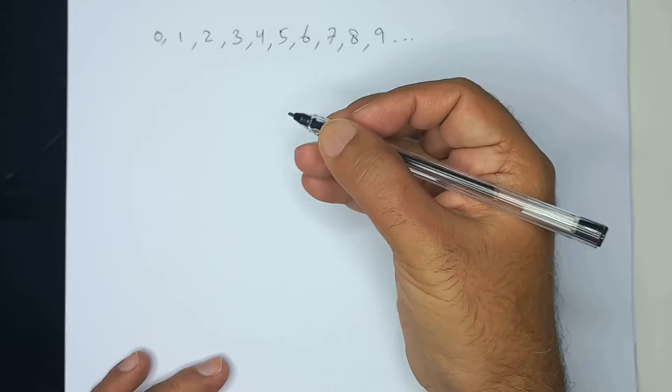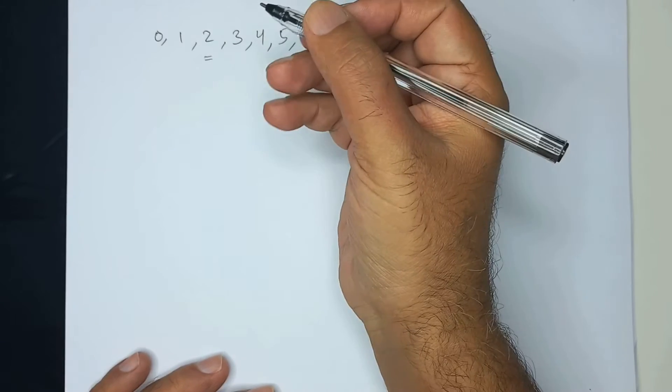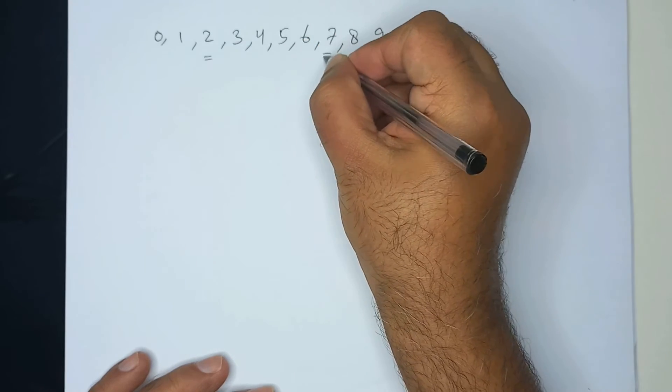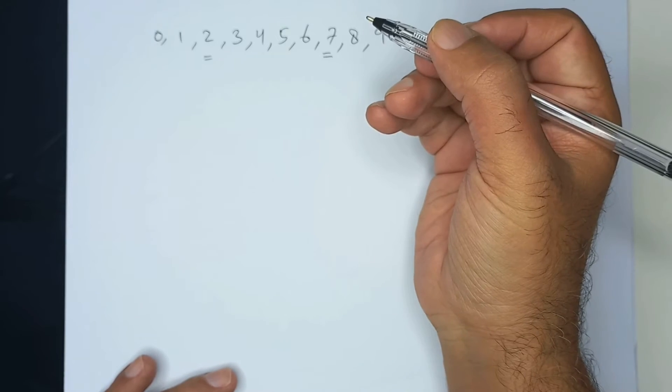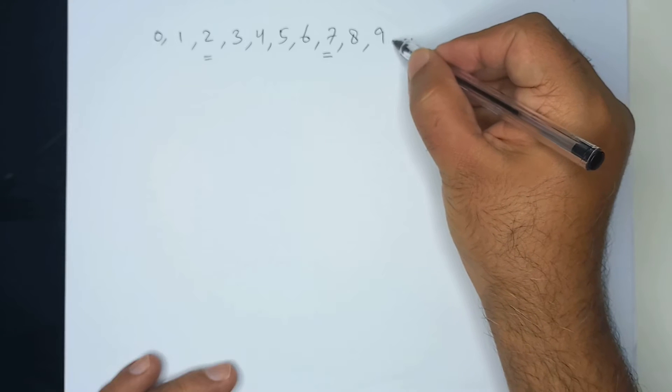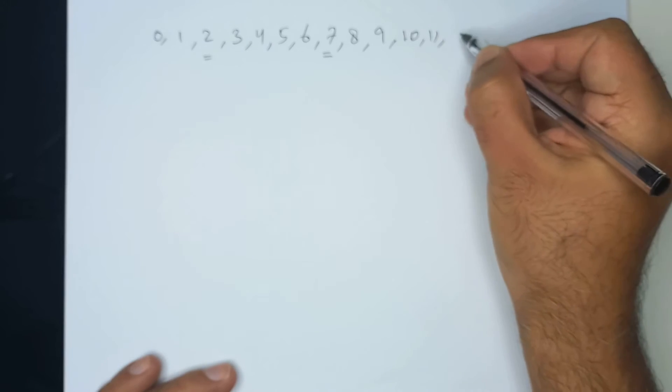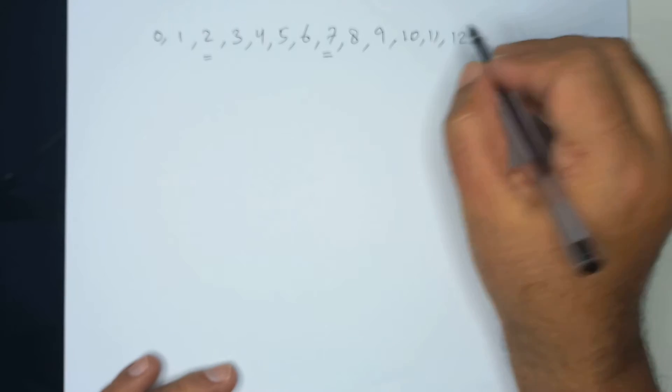When we think of number 2, we can think of 2 eyes. When we think of number 7, we might think of the 7 colors of the rainbow. So numbers go on beyond 9 to 10, 11, 12 and so on. And there is no end.